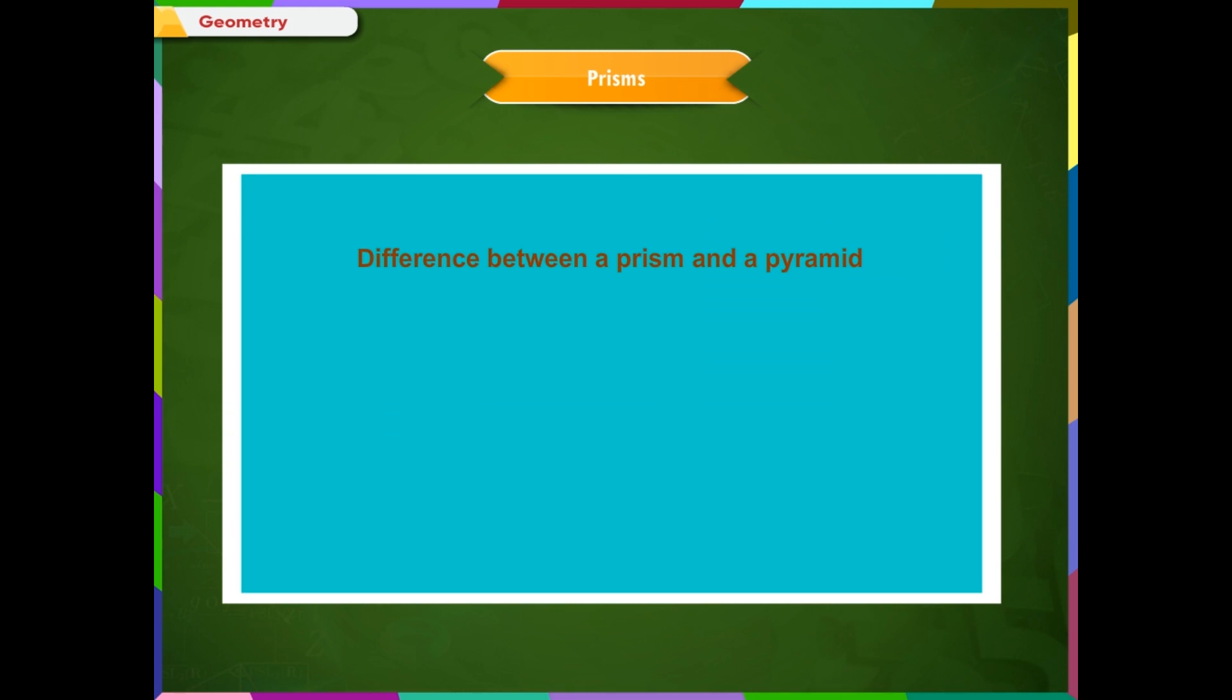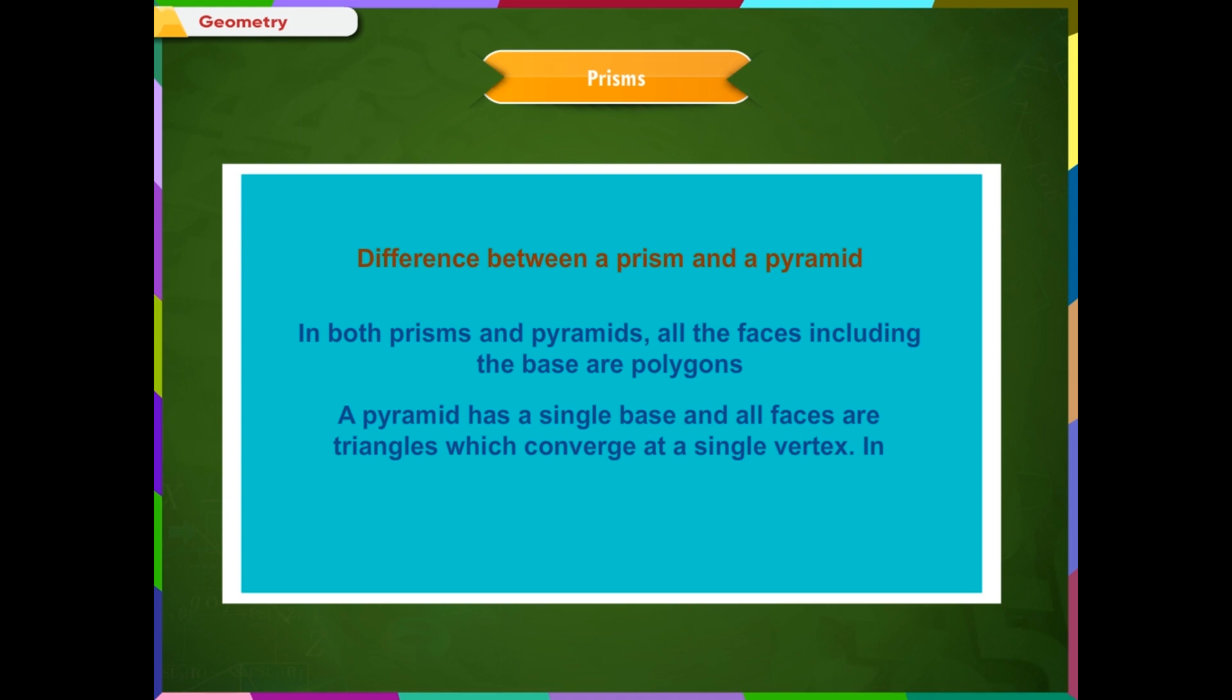Difference between a prism and a pyramid. In both prisms and pyramids, all the faces including the base are polygons. A pyramid has a single base and all faces are triangles which converge at a single vertex. In contrast, a prism has two congruent bases which are parallel and all the faces are parallelograms.